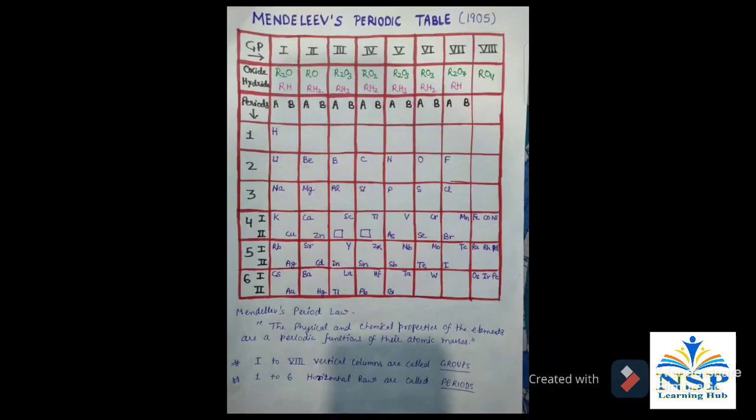Mendeleev arranged all the elements known at that time in order of increasing atomic weight and his arrangement was called periodic table. In the periodic table, the elements are arranged in eight vertical columns called groups and six horizontal rows called as periods.